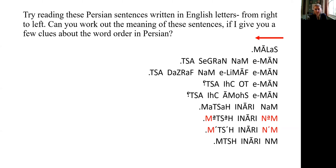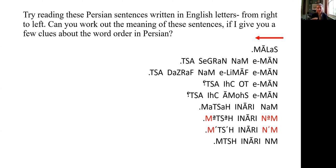Another feature of Persian, similar to very many languages, is that the doer of the verb — the agent of the verb, the subject — comes first and the verb concludes the sentence. So the order is subject, object, verb. The action comes right at the end.